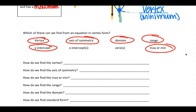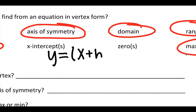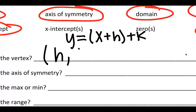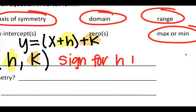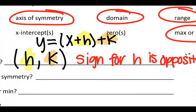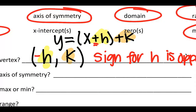How do we find the vertex? Remember our form is y equals x plus or minus h, plus or minus k. Your vertex is (h, k) — you're looking at these two values. An important thing to remember is the sign for h is always going to switch — it's opposite. So if it's positive in the equation, it would be negative for the vertex. If it were negative, it would be positive. k is going to stay the same, whatever k is.